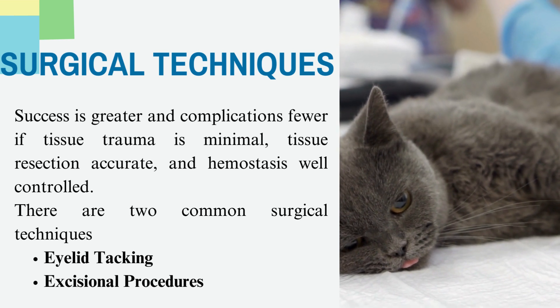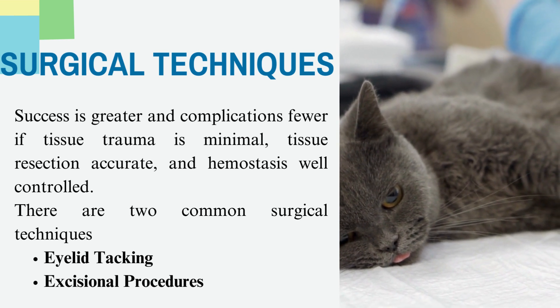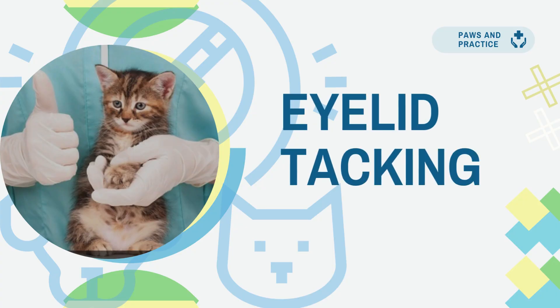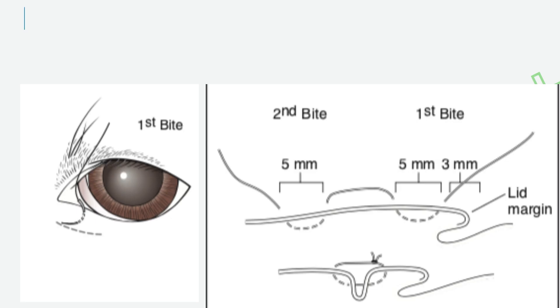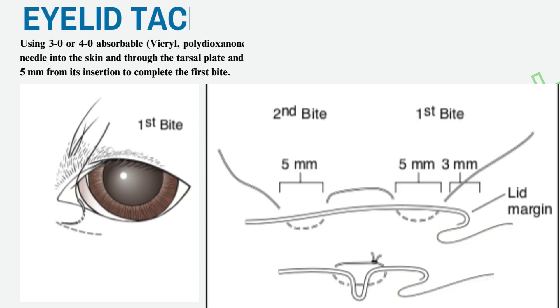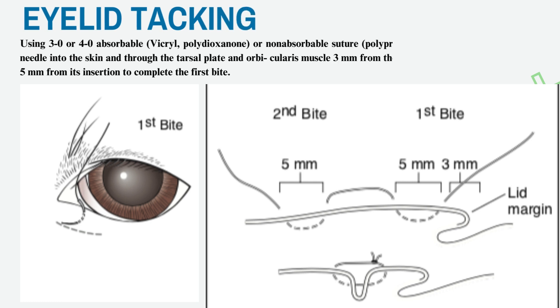There are two common surgical techniques: eyelid tacking and excisional procedures. These use 3-0 or 4-0 absorbable suture — vicryl or polydeoxanone — or non-absorbable suture such as polypropylene, silk, or nylon.